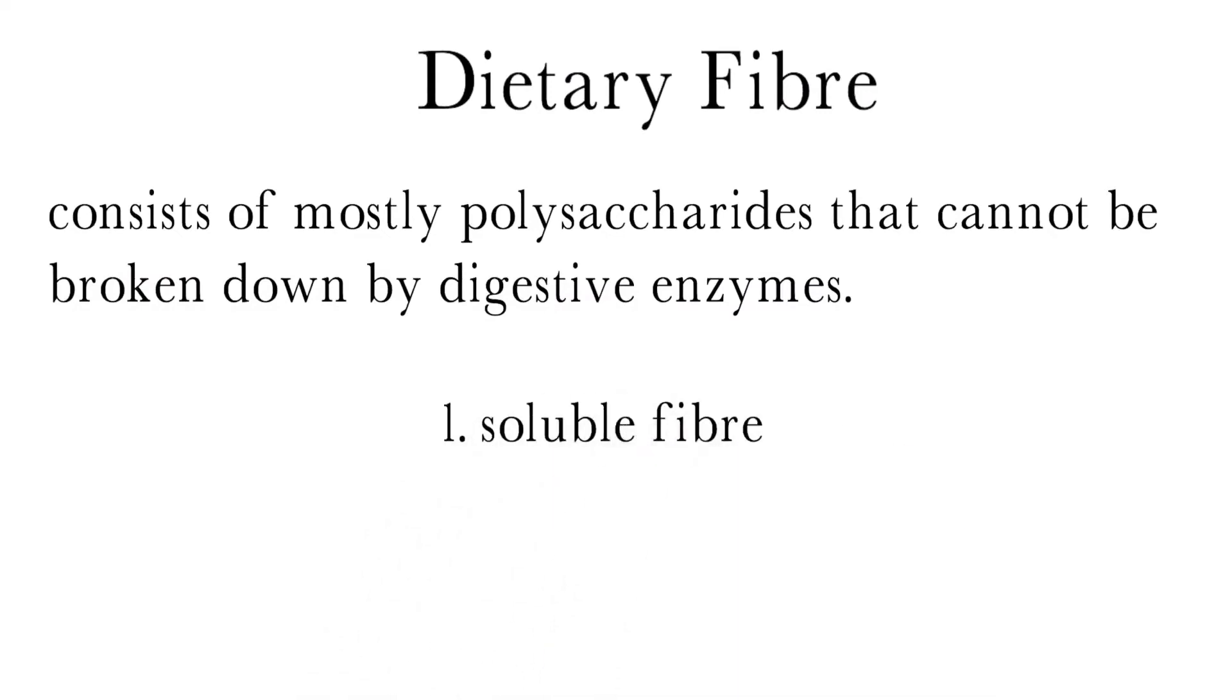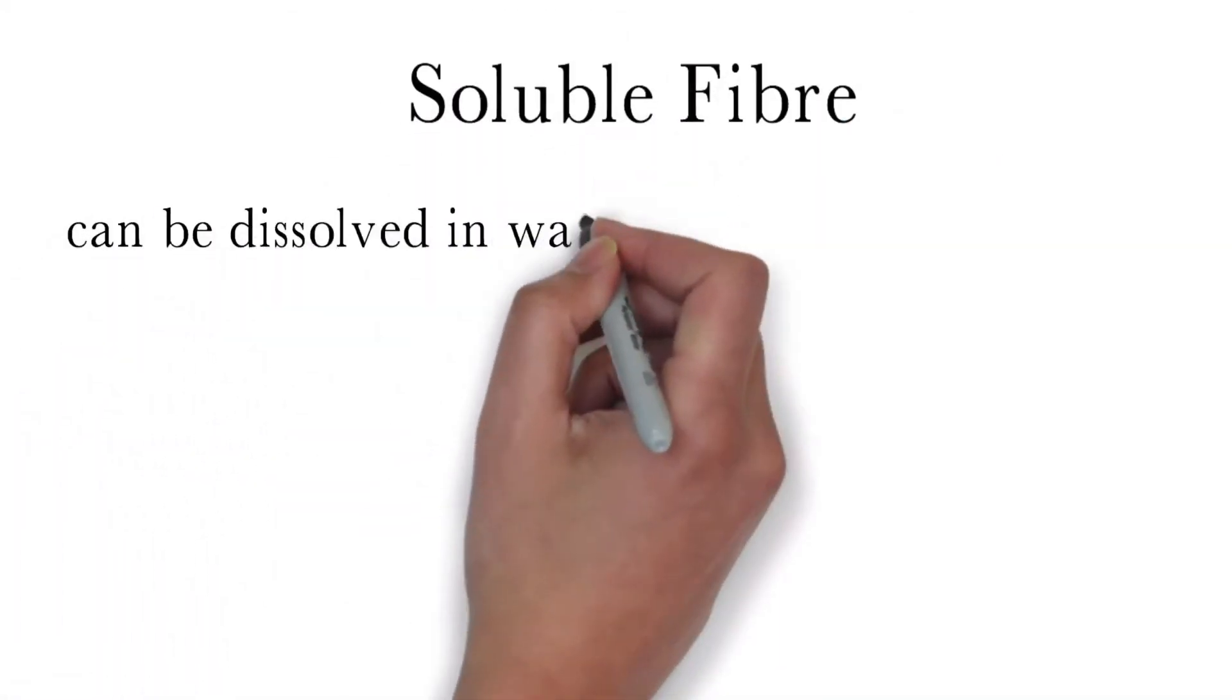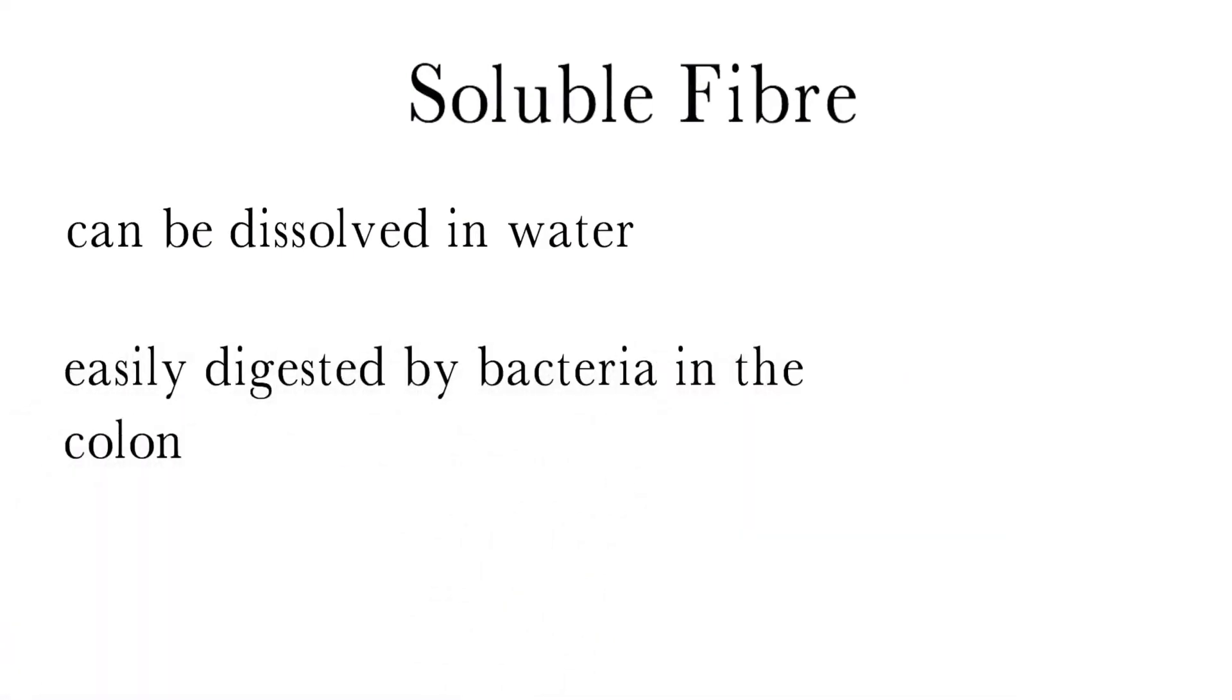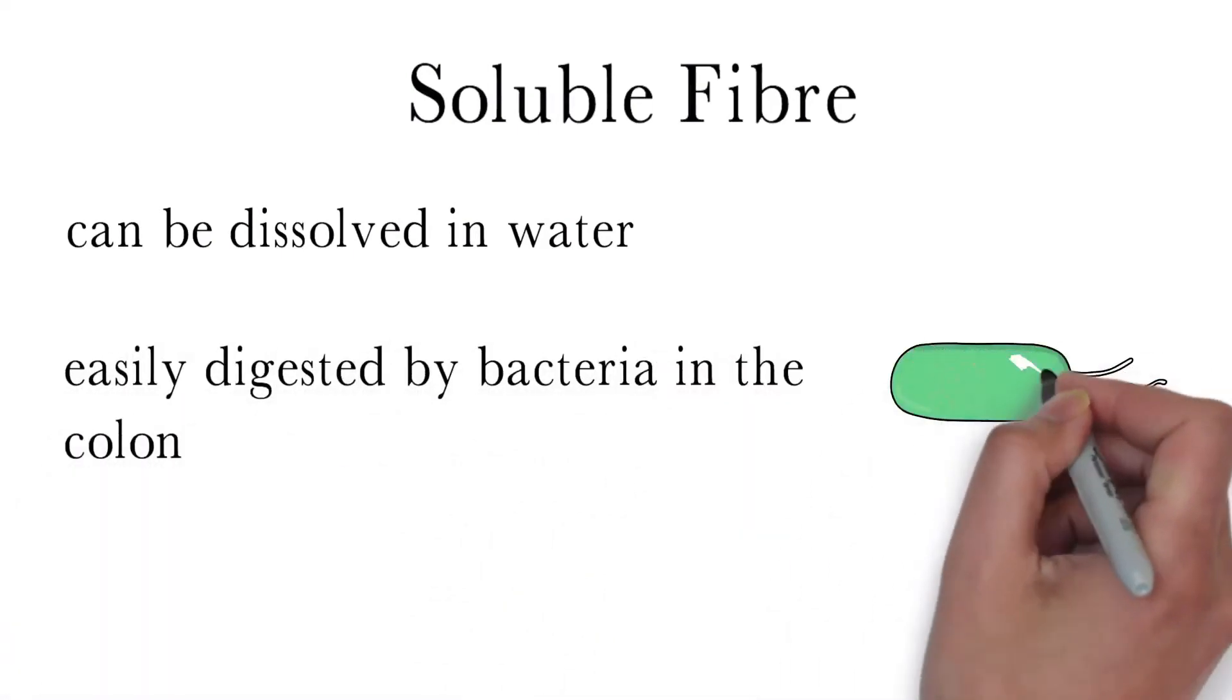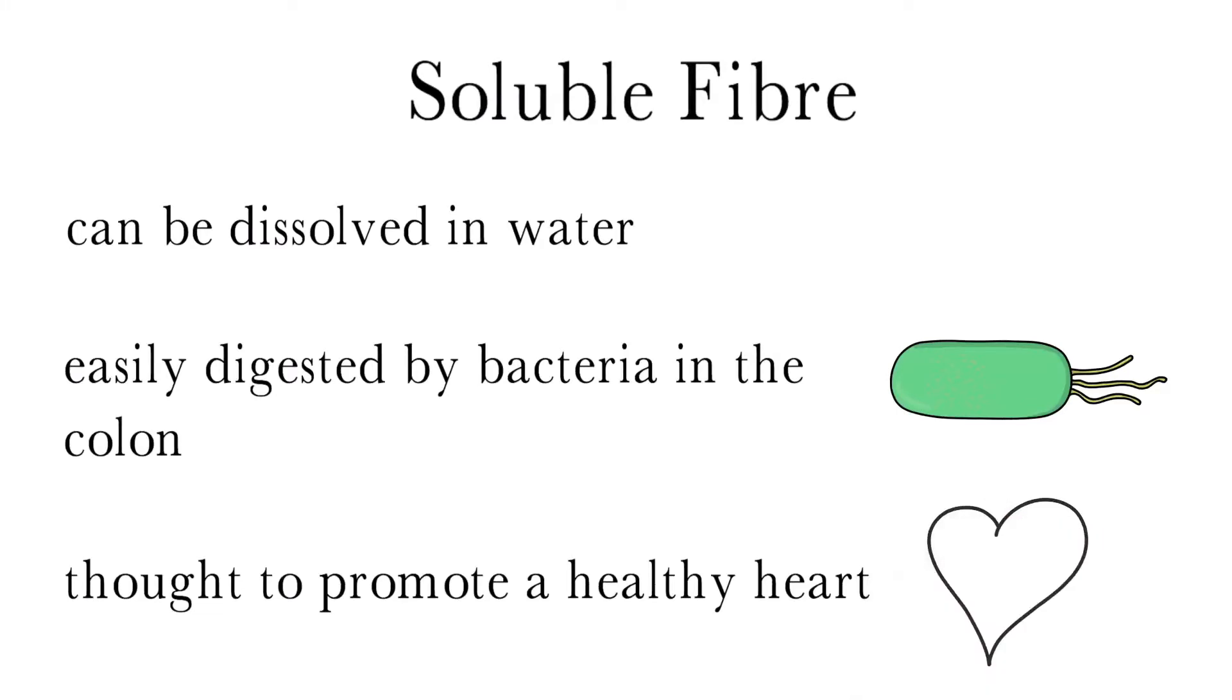There are two general types of fiber, soluble fiber and insoluble fiber. Soluble fiber can be dissolved in water, and although we can't digest it, it can be digested by bacteria in our colon. Soluble fiber can be found in oats, legumes, and citrus fruits. It is thought to assist in promoting a healthy heart.